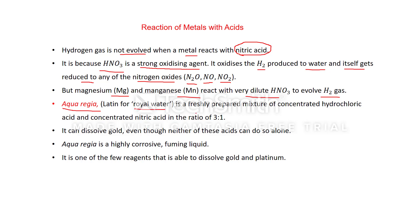Aqua regia is a freshly prepared mixture of concentrated hydrochloric acid and concentrated nitric acid in a ratio of 3:1. It can dissolve gold, even though neither acid can do so alone — gold cannot dissolve in concentrated HCl alone nor in concentrated HNO₃ alone. Aqua regia is highly corrosive and fuming, and is one of the few reagents able to dissolve gold and platinum.